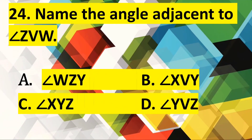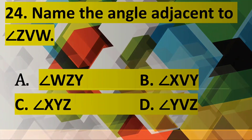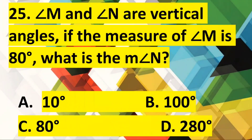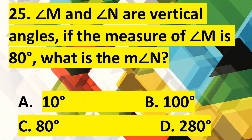Number 24: Name the angle adjacent to angle ZVW. Number 25: Angle M and angle N are vertical angles. If the measure of angle M is 80 degrees, what is the measure of angle N?